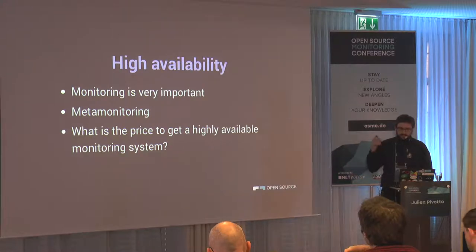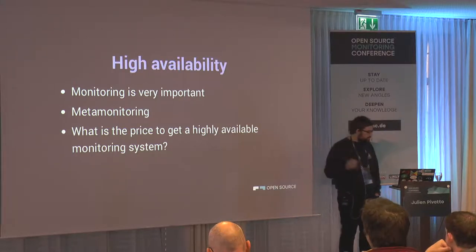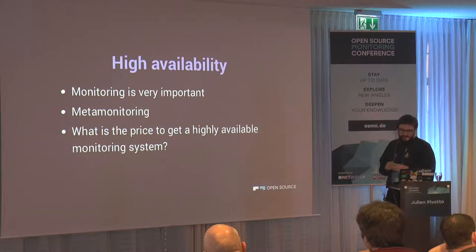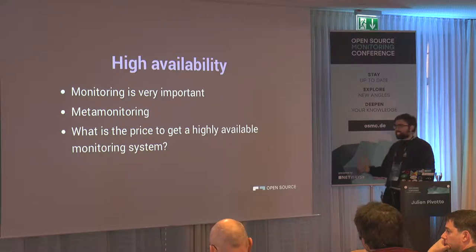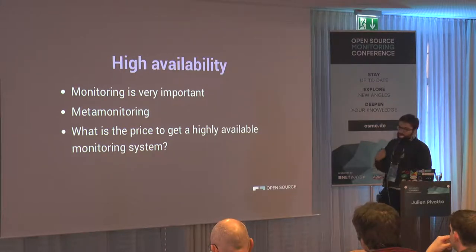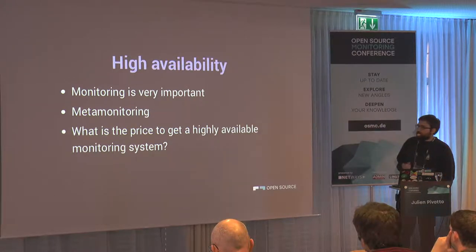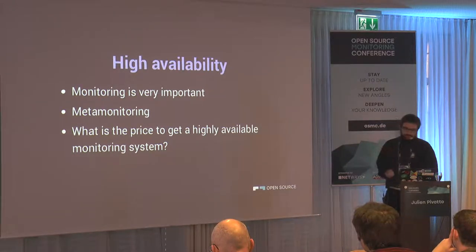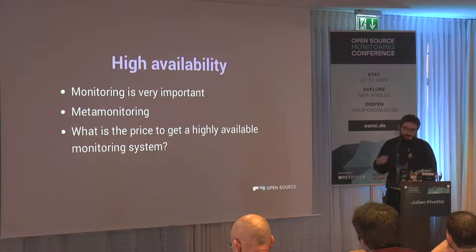High availability is super important in monitoring. You cannot tell your customer the database was down because the monitoring system was down. You cannot say you didn't see what was going on, so you couldn't act or react, or you took the wrong decision. It's very important to have availability on your monitoring. It's important to monitor your monitoring — that's called meta-monitoring. In a lot of monitoring systems that costs a lot and is very complex to set up. We'll see later that with Prometheus it's very easy to get availability on your monitoring stack.